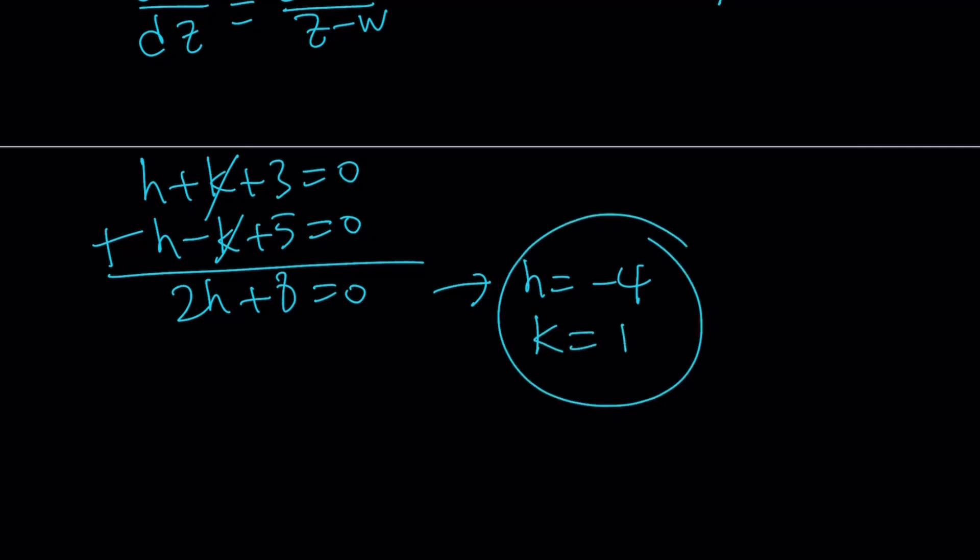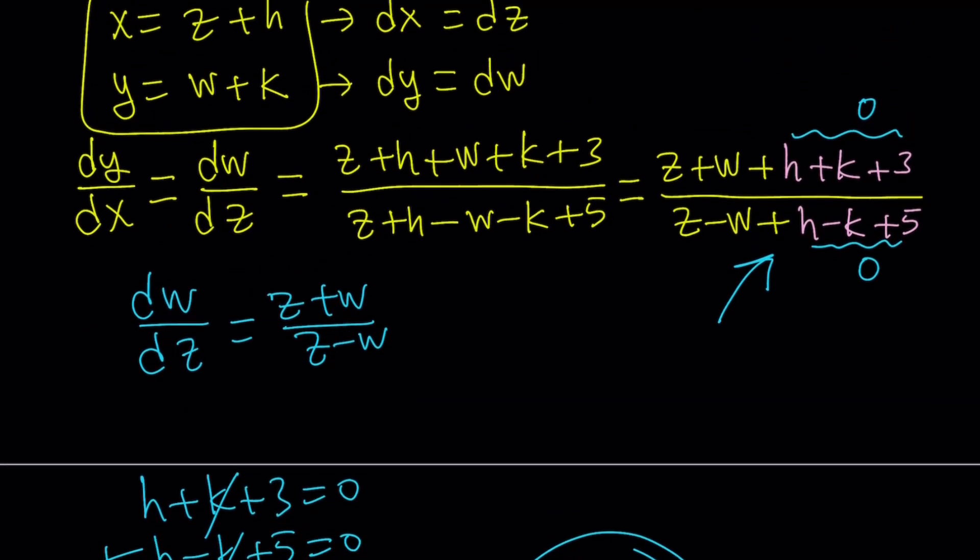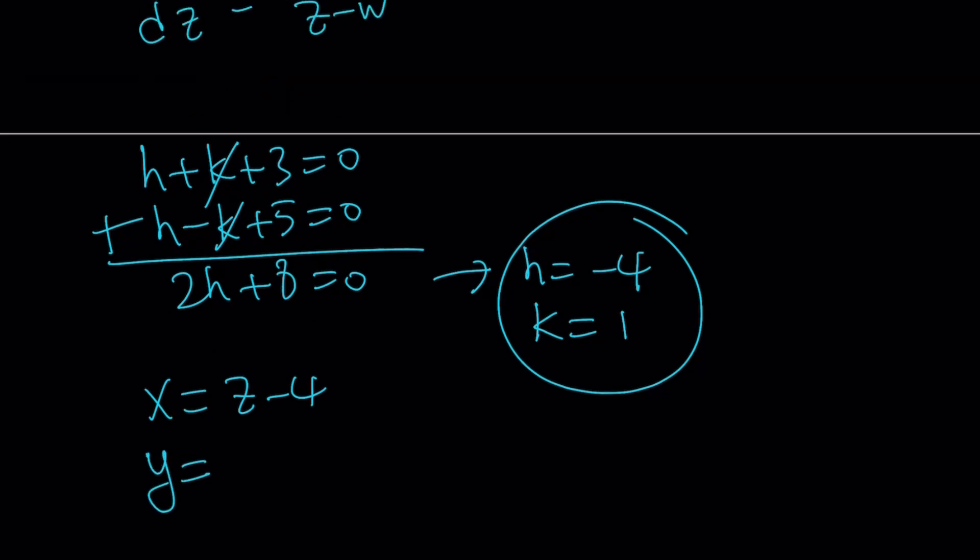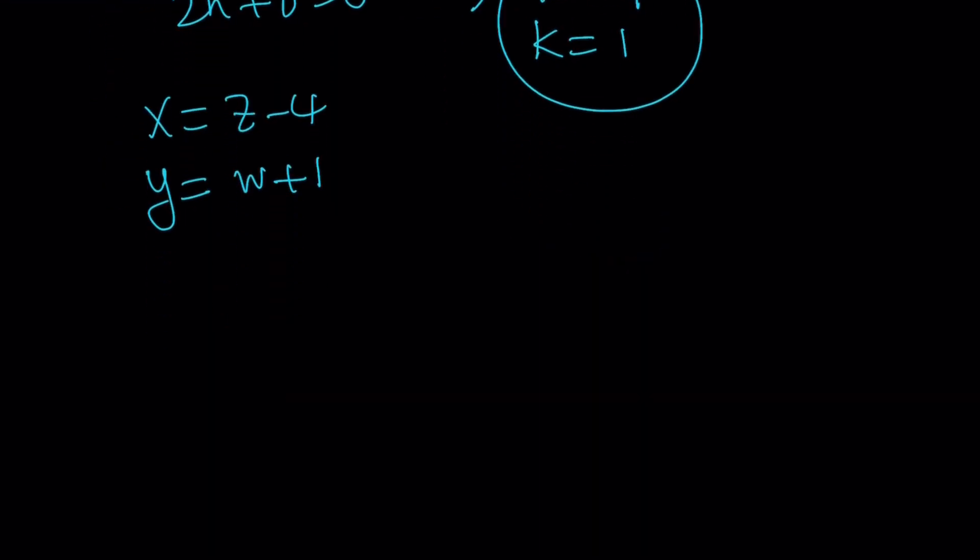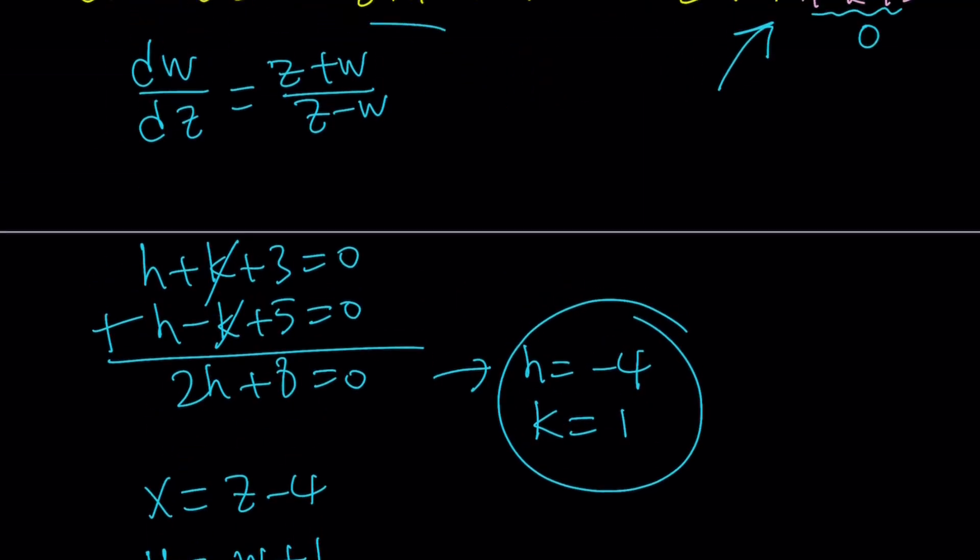So, we got the h and k values, which means we can plug them in and just write x and y in terms of z and w. So, x is going to be z plus h. x is going to be z minus 4. And y is going to be w plus k. It's going to be w plus 1. So, these are going to be the expressions that I'm using at the end. But we're going to solve this equation in z and w first.